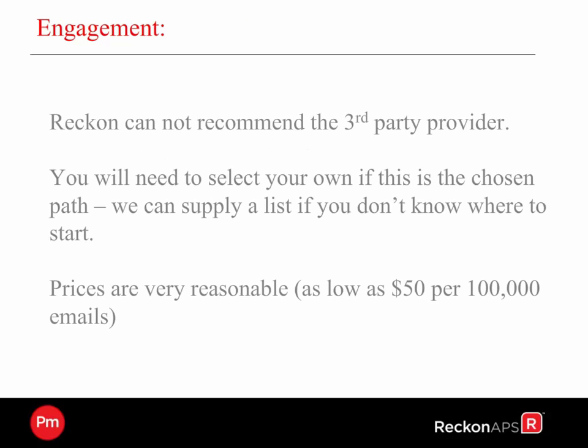Reckon APS cannot recommend the third party provider nor the mechanism in which you'll use your SMTP. You'll need to engage with your IT manager to have this discussion. The considerations you'll need include the type of information that you want back in terms of rejection of emails. If you're looking for a third party provider, we can help provide you a starting point with a list that we are aware of — there are many out there. Prices can be very reasonable depending on how much you pay, and they start as low as $50 per 100,000 emails.